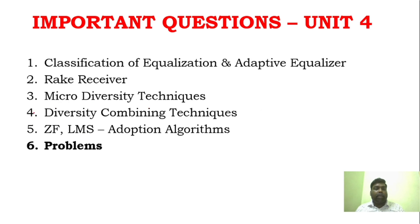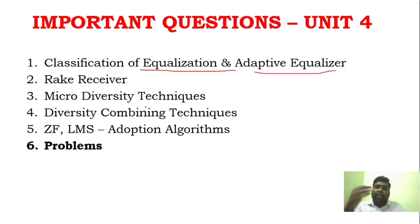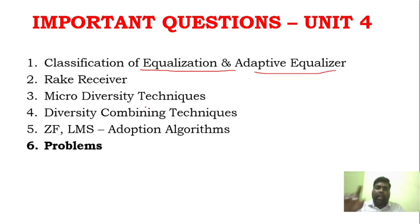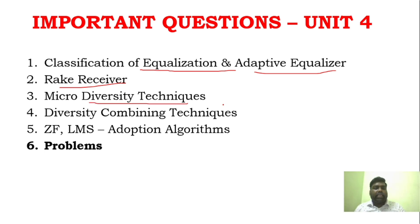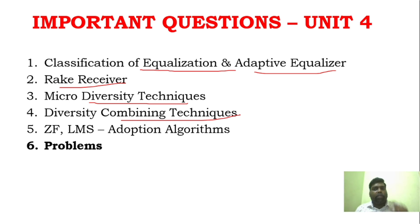Unit 4 has about 5 questions to study. Classification of Equalization and Adaptive Equalization are important questions — Adaptive Equalization involves diagram and explanation. Rake Receiver is a good question — it's mainly diagram-based. Micro-Diversity Techniques, Diversity Combining Techniques, Zero-Forcing and LMS algorithms are also important 8-mark questions for Unit 4.